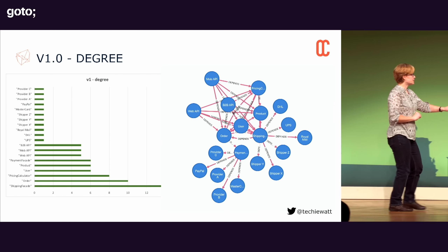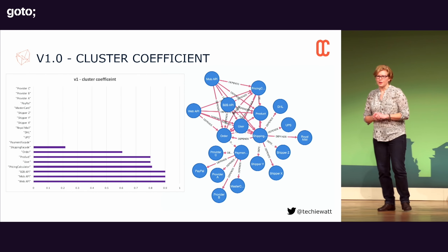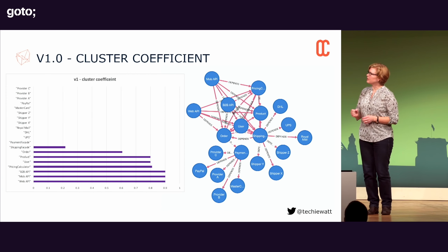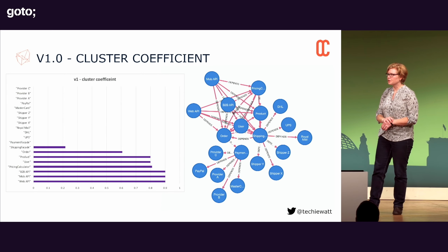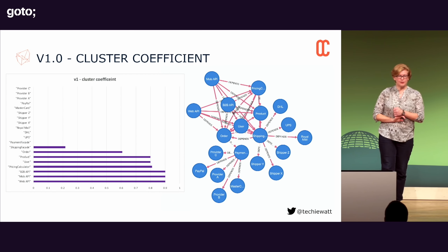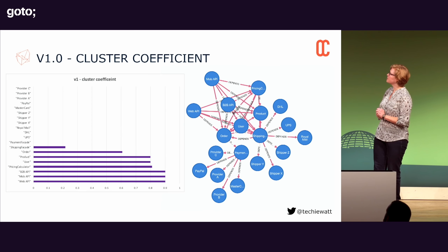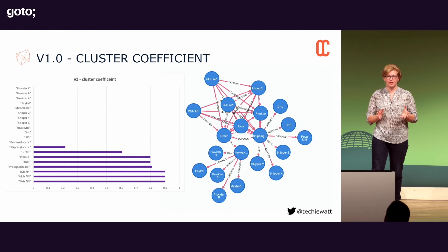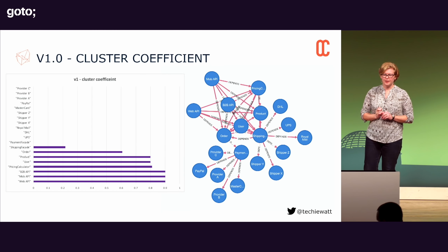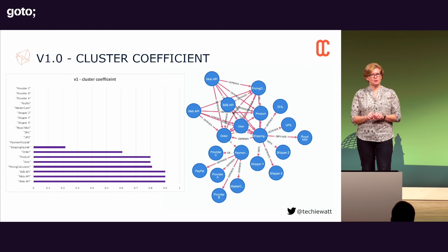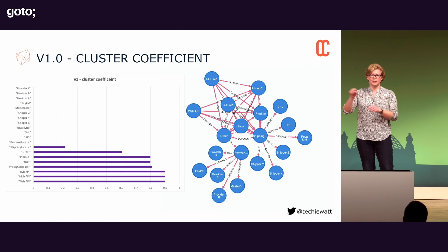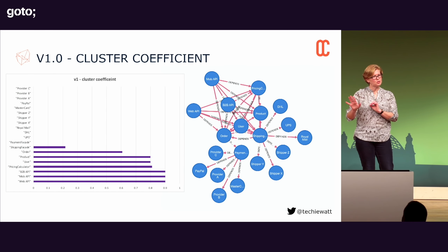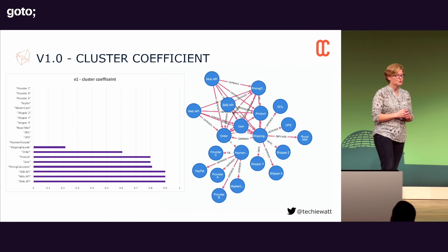We do the same thing for the cluster coefficient. We find that a whole bunch of services don't even register — their cluster coefficient is zero. But our top seven offenders, as far as the cluster coefficient is concerned, have a value of 0.6 and above. This means those services have about a 60% probability that they're also all talking amongst each other — they might be quite chatty — and it's an indicator that maybe we should be looking a little bit closer at those services.